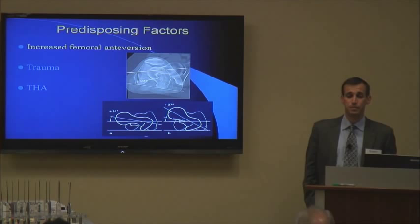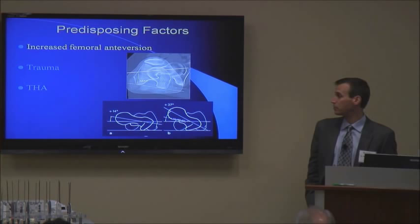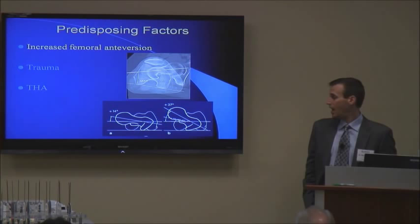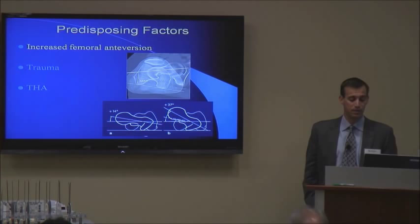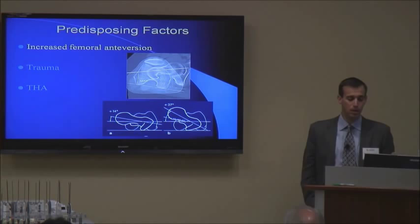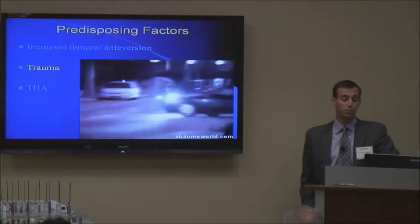There are generally three predisposing factors for iliopsoas snapping and pain. One would be increased femoral anteversion. Here you can see a CT showing femoral anteversion taken through the knee in comparison to the hip. The A image on the left shows normal femoral anteversion of about 14 degrees, and the one on the right shows increased femoral anteversion. Another predisposing factor would be trauma.